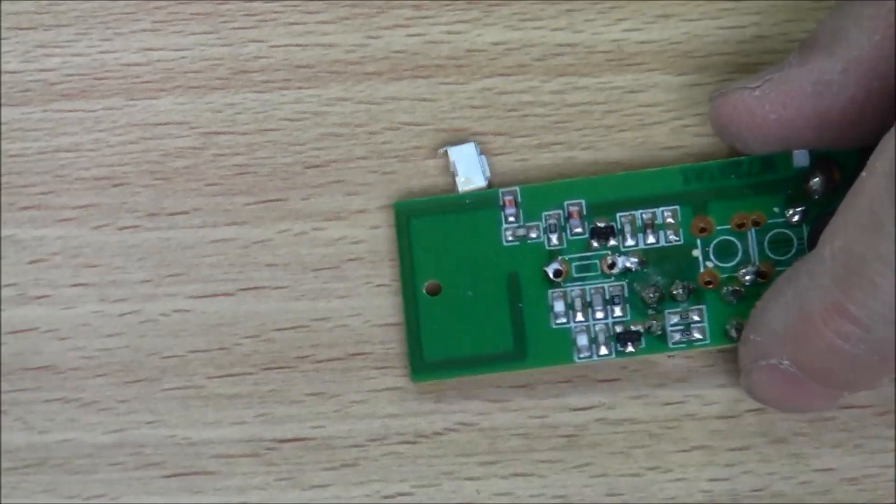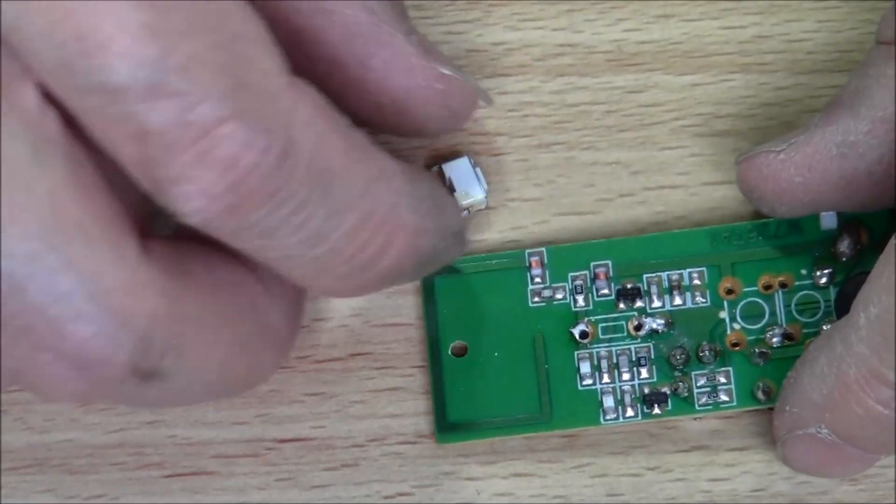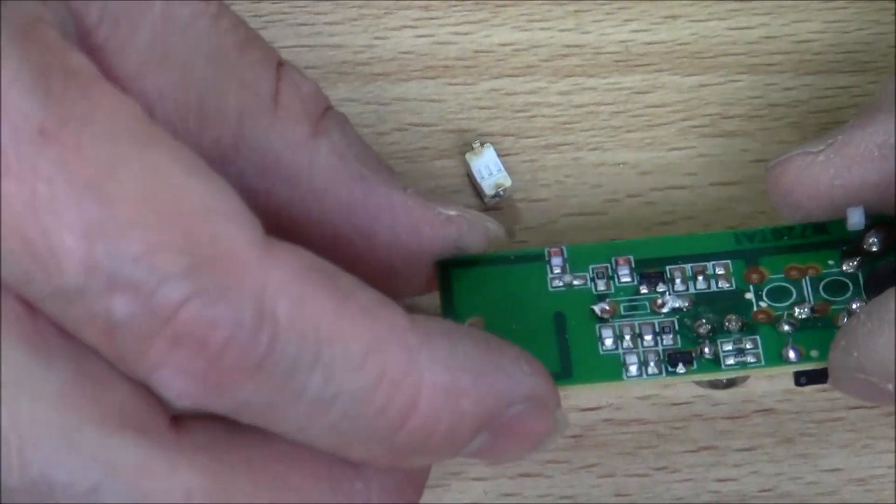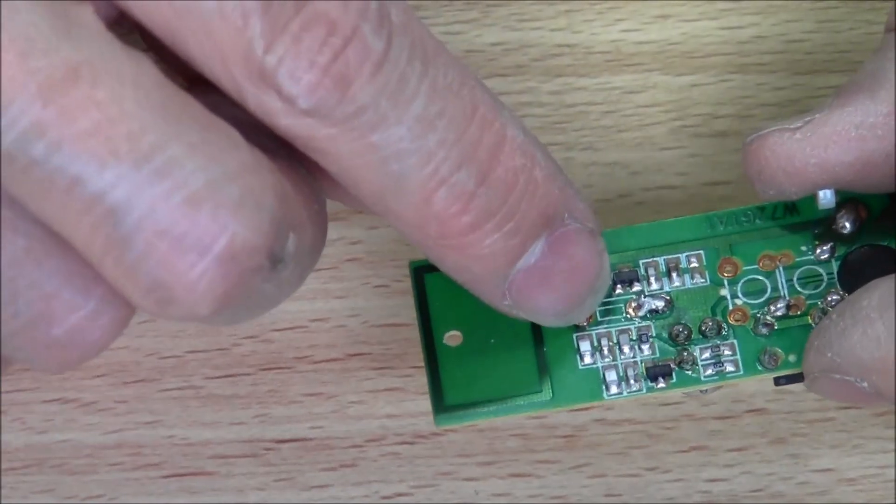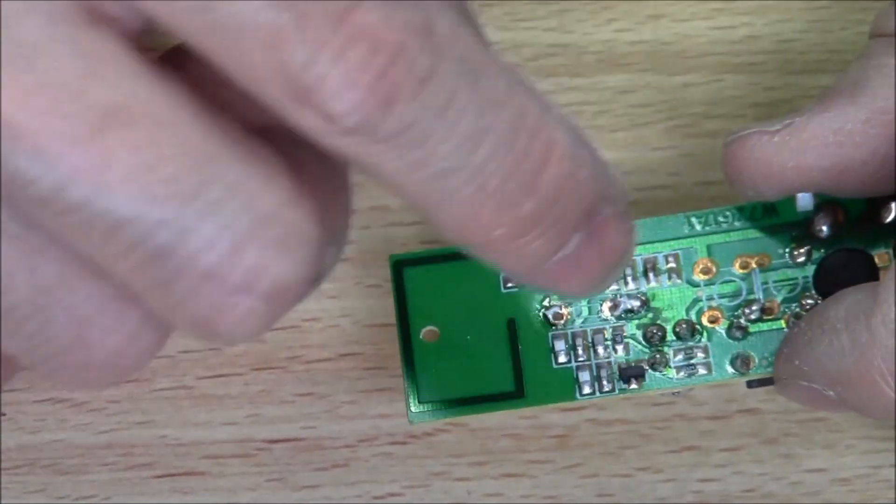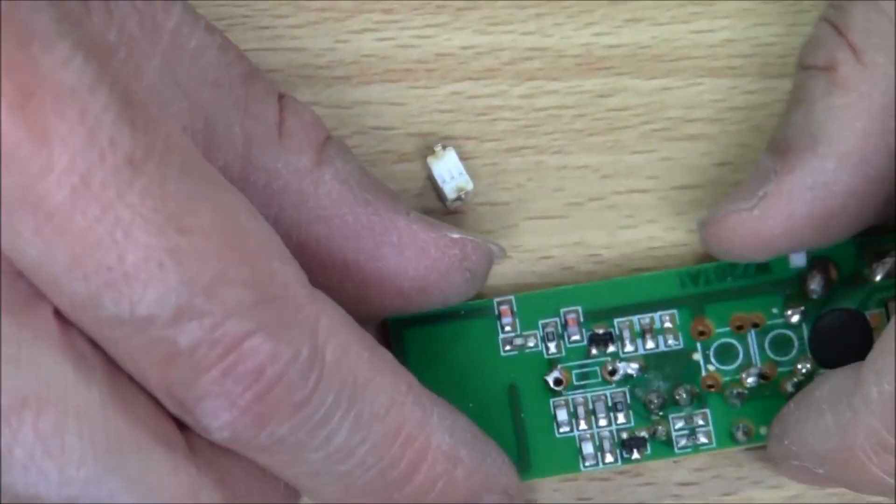Now the switch has been removed. Next step is now to drill the case. I'll mount the switch and then solder all the wires back on.